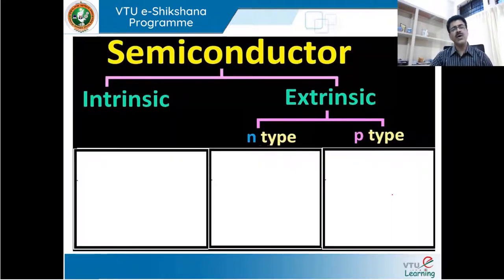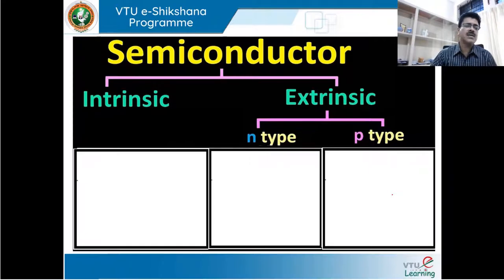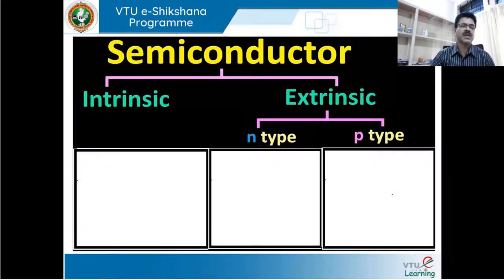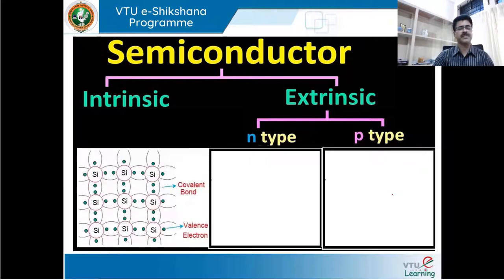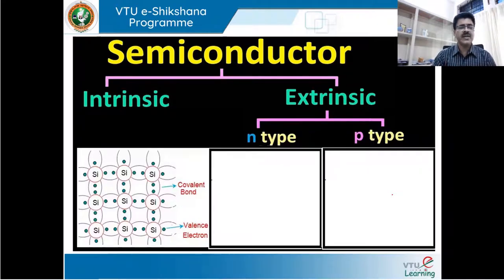Semiconductors are generally divided into two categories. The first is called the intrinsic semiconductor and the second is called the extrinsic semiconductor. The word intrinsic means it is pure — a semiconductor in its purest state is what we call an intrinsic semiconductor. One of the most significant features of all semiconductor materials is that they are tetravalent, meaning they have four electrons in the last orbit, or four valence electrons.